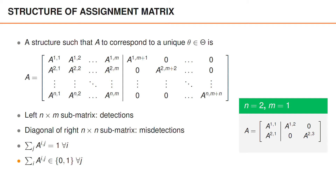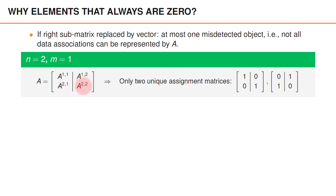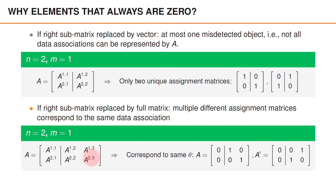It might seem counterintuitive to encode misdetections using this diagonal submatrix, but the reason can be explained with examples. If the right submatrix were replaced by a vector, at most one object could be misdetected in an assignment, meaning not all valid associations could be represented. Conversely, if the diagonal submatrix were replaced by a full matrix, multiple different assignment matrices could correspond to the same data association, and we need each unique assignment matrix to correspond to a unique association.